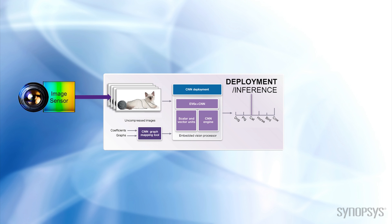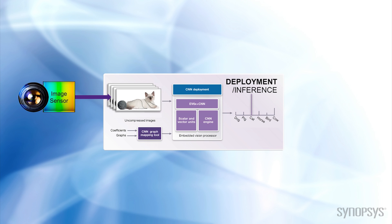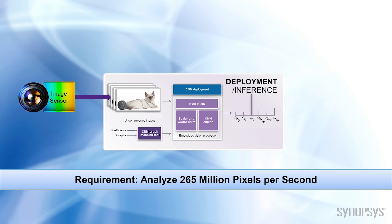Then, when images come through the camera lens to the image sensor, they are processed in the embedded vision processor that has been configured with the trained graphs and weights. If a cat is in the field of view, the convolutional neural network will return a result that it is seeing a cat. This processing is no small feat — it takes a lot of horsepower to execute the algorithms on the embedded system in real time and using minimal power.